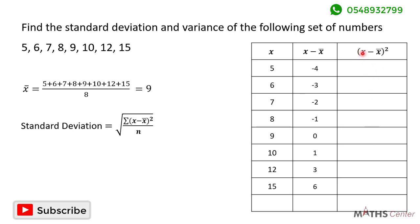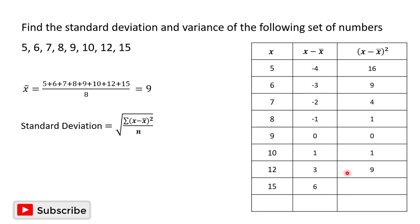In the third column we square the x minus mean values. Negative 4 squared is 16. Negative 3 squared is 9. Negative 2 squared is 4. Negative 1 squared is 1. 0 squared is 0. 1 squared is 1. 3 squared is 9. And 6 squared is 36. Adding all of them together, sigma (x minus the mean) squared is 76.